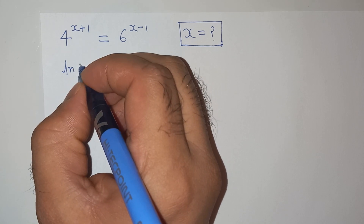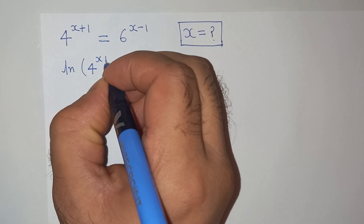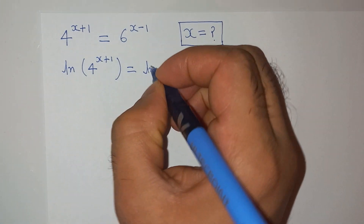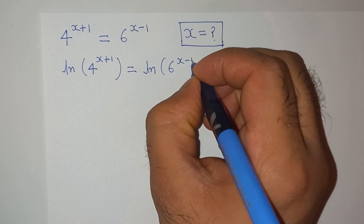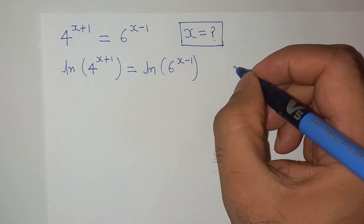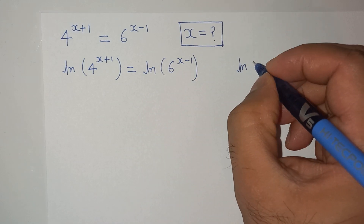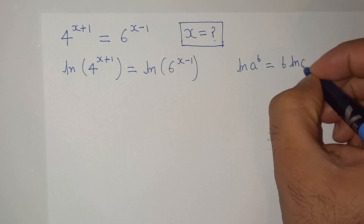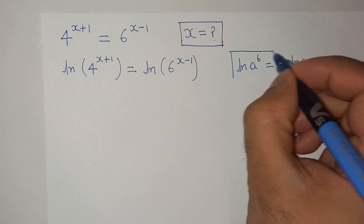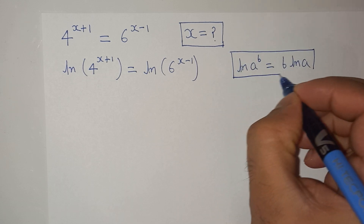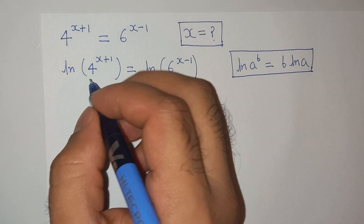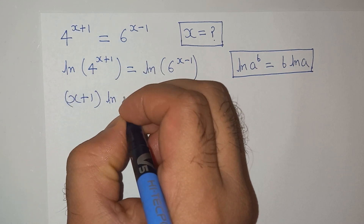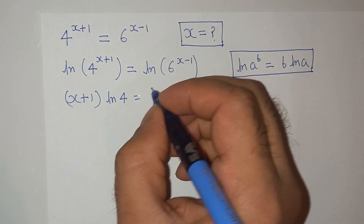I'm going to apply log on both sides: log 4 power (x+1) equals log 6 power (x-1). Now we know this logarithm formula: log a^b equals b·log a. I'm going to apply this logarithm rule, so we will have (x+1)·log 4 equals (x-1)·log 6.